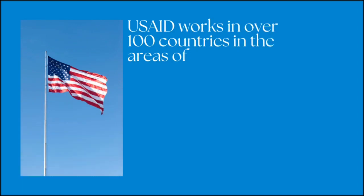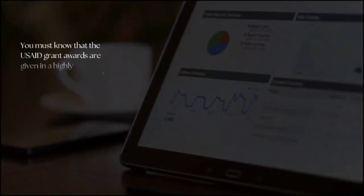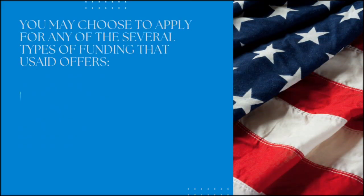USAID works in over 100 countries in the areas of promoting global health, supporting global stability, providing humanitarian assistance, catalyzing innovation and partnerships, and empowering women and girls. You must know that USAID grant awards are given in a highly competitive manner, and understanding the eligibility and capacity of your organization must be the first step towards pursuing a USAID funding opportunity.